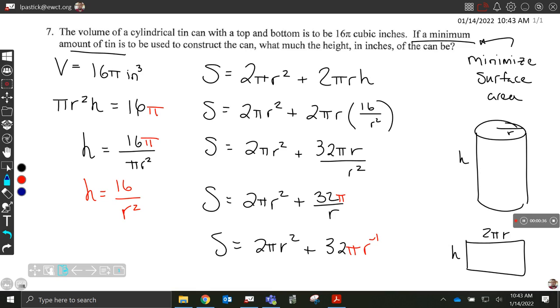If a minimum amount of tin is to be used to construct the can, what must the height in inches of the can be? We're provided with volume, so the first thing I do is write down the volume equals 16π cubic inches. After that, I read the sentence one more time - it says if a minimum amount of tin is to be used, that tells me I'm going to minimize surface area in order to construct this can. Now I've got two different formulas in play: volume of a cylinder and surface area of a cylinder.